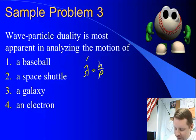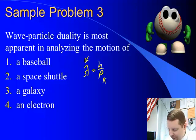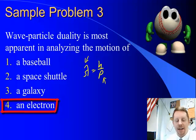we're going to see the biggest wavelength, the most wave properties, where we have the smallest momenta. And that's going to occur where we have the smallest masses. So we want to look at something that has a very small mass. Baseball, space shuttle, or a galaxy? Looks like our answer must be an electron. It has such a small mass that the wave nature will be more apparent than for those other objects.